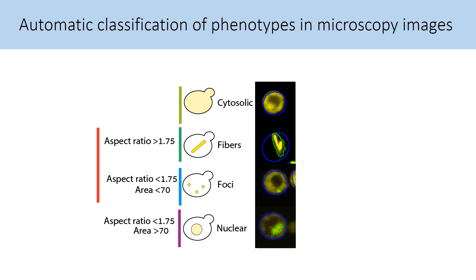In order to quantify these phenotypes across thousands of single cells, we developed and wrote scripts to automatically classify cells into one of these four phenotypes. The script detects bright regions in cells as ROIs, or regions of interest, and subsequently classifies them based on their shape and size. If no ROI is found, the cell is cytosolic. If the aspect ratio of an ROI is more than 1.75, then we assigned it as being a fiber. If it's below 1.75 and has an area below 70 pixels, we classify it as foci. Together, both are considered agglomerates or condensates. Finally, if an ROI has an aspect ratio below 1.75 yet an area above 70, we consider it nuclear.